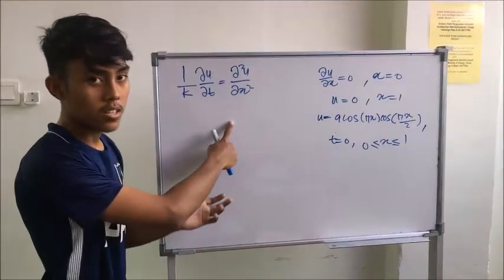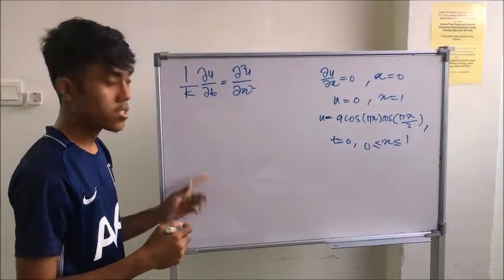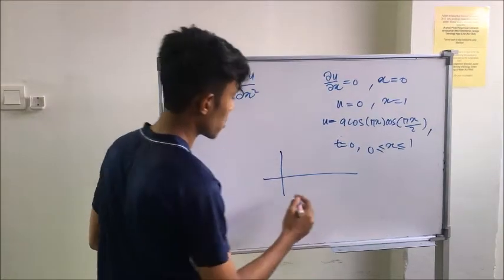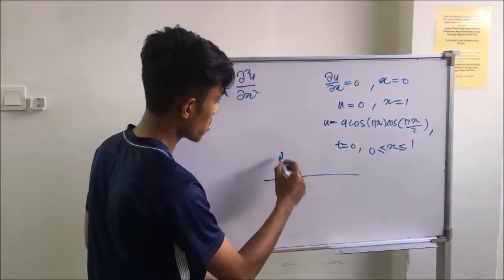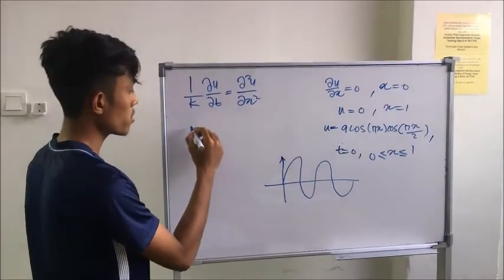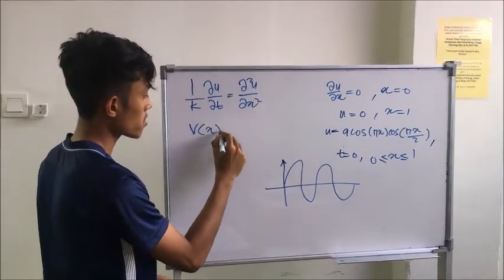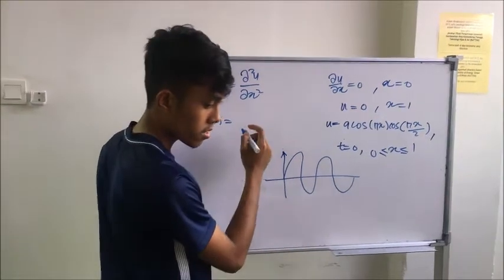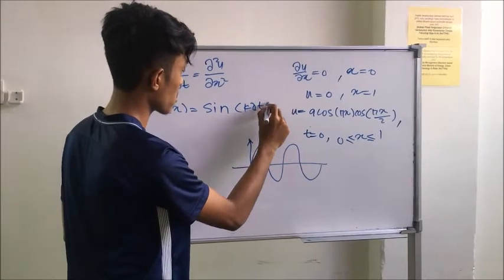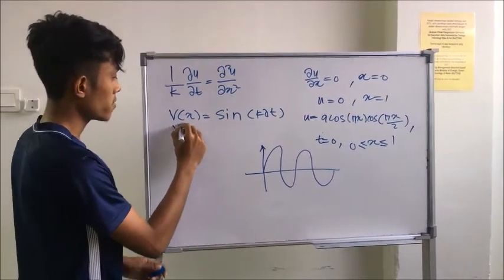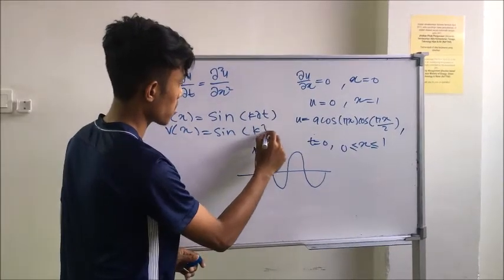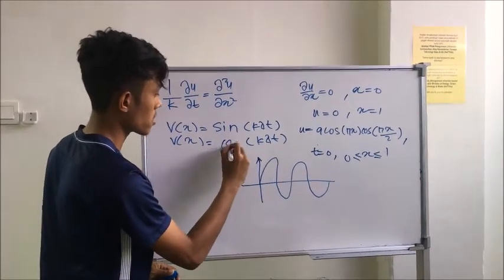So this is the equation. Since this is a heat conduction problem, it will show the sine and cosine terms. So we will use Vx equal to sin k lambda t, and Vx equal to cos lambda t.